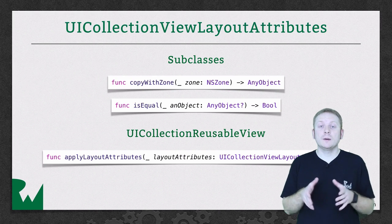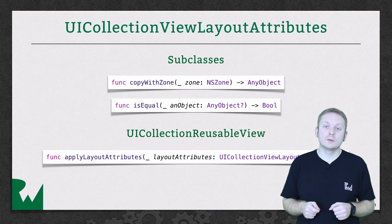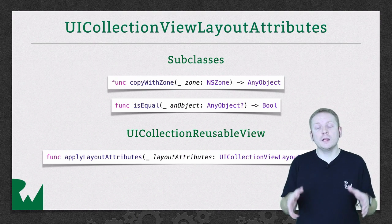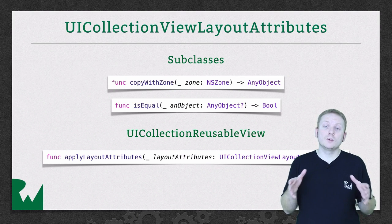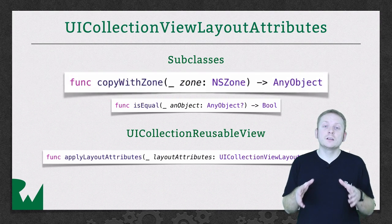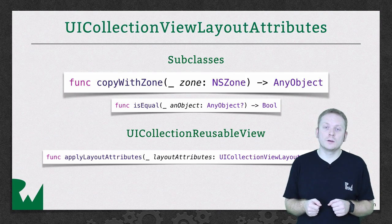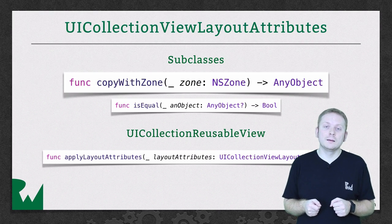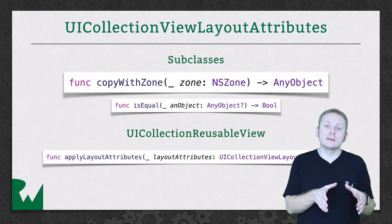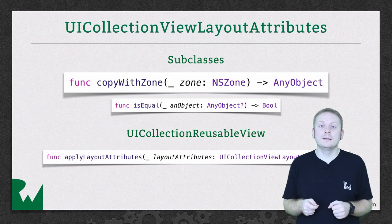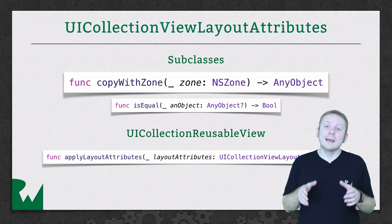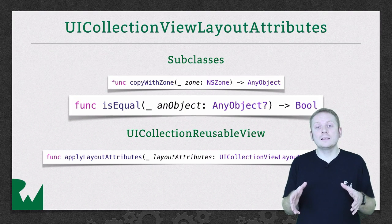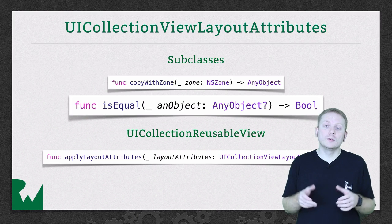Layout attributes are likely to be copied by the collection view as part of the layout process. So it's important that you implement the following two methods in any subclass of UICollectionViewLayoutAttributes. The first, copyWithZone, is part of the NSCopying protocol. You simply override this method, invoke super to get an object that's been copied, set the custom properties on the copied object to the same values as the instance being copied, and then return it. isEqual is important because the collection view will only apply layout attributes that have changed, and it uses this method to determine those changes.